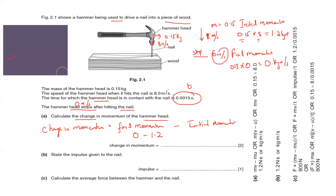Note: the initial momentum is not 8 — that's the initial speed. The momentum is mass times velocity, so the initial momentum is 8 times 0.15 equals 1.2 kg·m/s. The final momentum is 0 because the hammer stops. So the change in momentum is negative 1.2, which can be written in kg·m/s or Newton seconds.